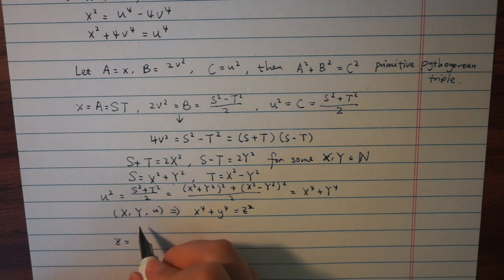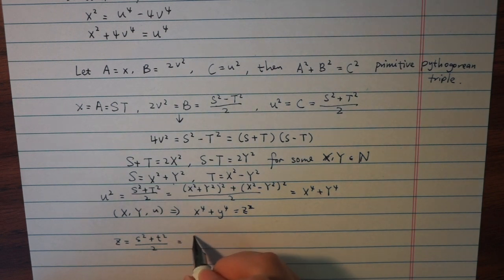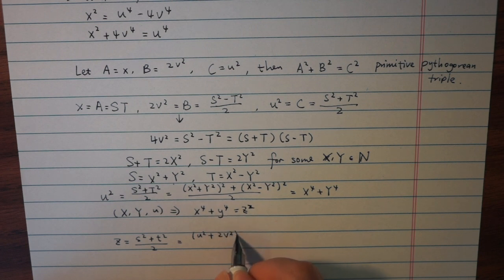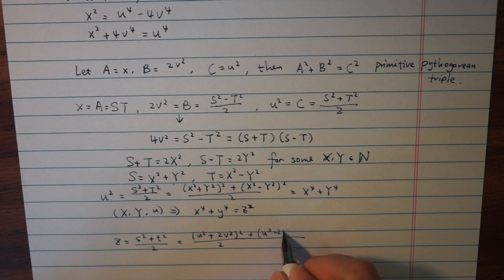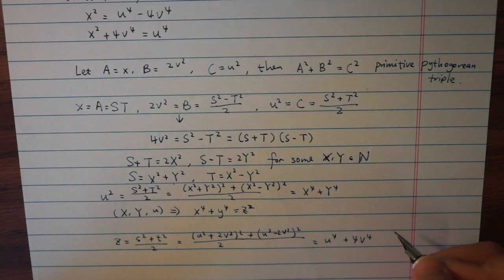Using various formulas from above, we find that z equals s squared plus t squared over 2, and plug in those formulas, we get z is actually equal to u to the fourth plus 4 times v to the fourth. Since all of them are positive integers, we conclude that u is smaller than z.